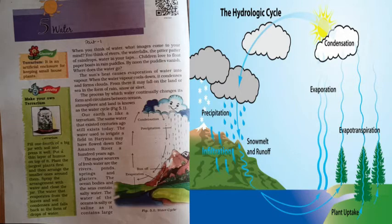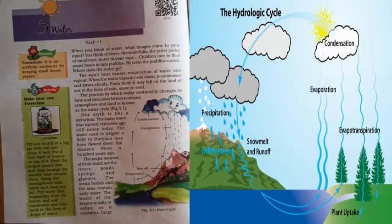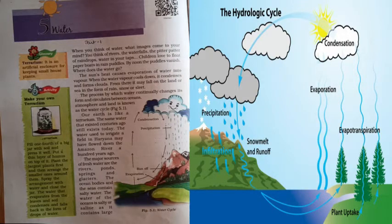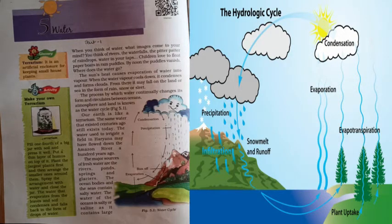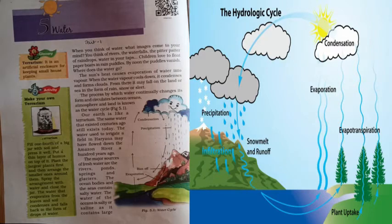When the water vapour rises in the atmosphere, the condensation process starts. This occurs because the temperature decreases with altitude. At higher levels, due to the cooling, air has less capacity to hold water vapour. During condensation, the vapours are changed into tiny water droplets or ice crystals, which rise further in the atmosphere and clouds are formed.